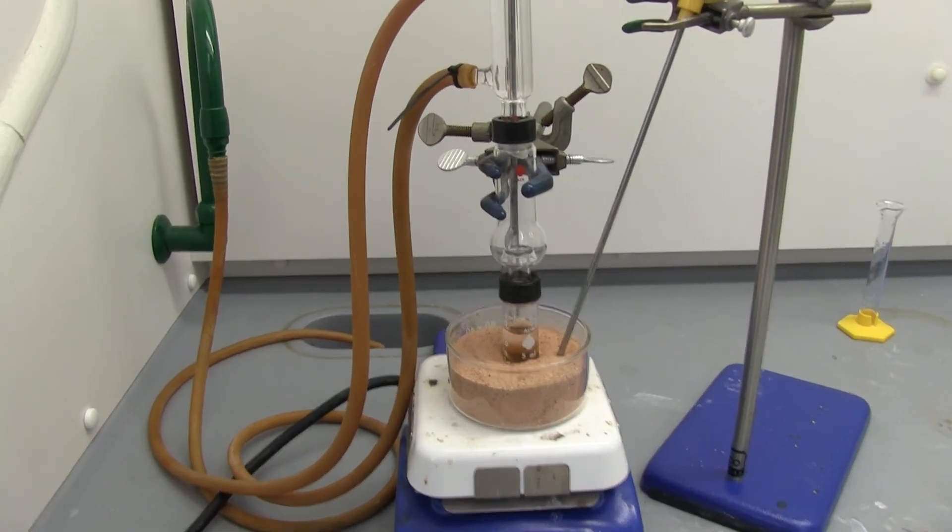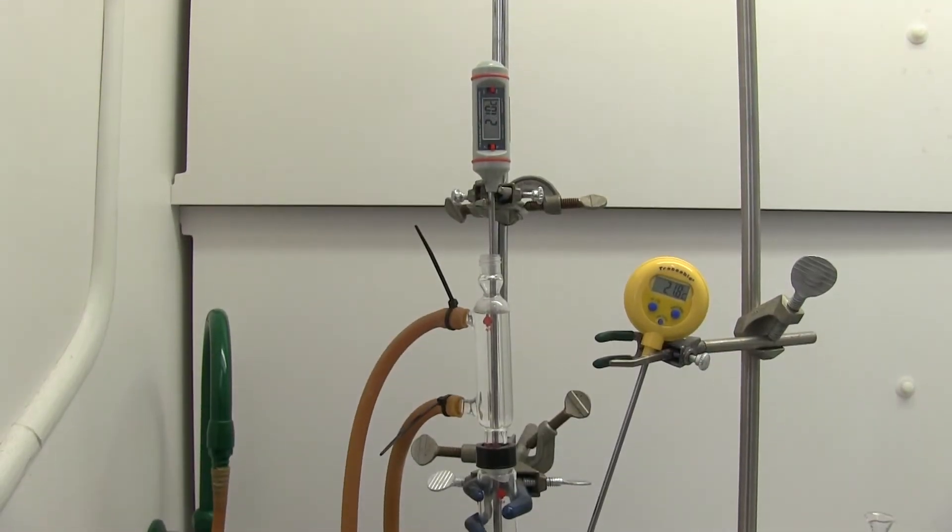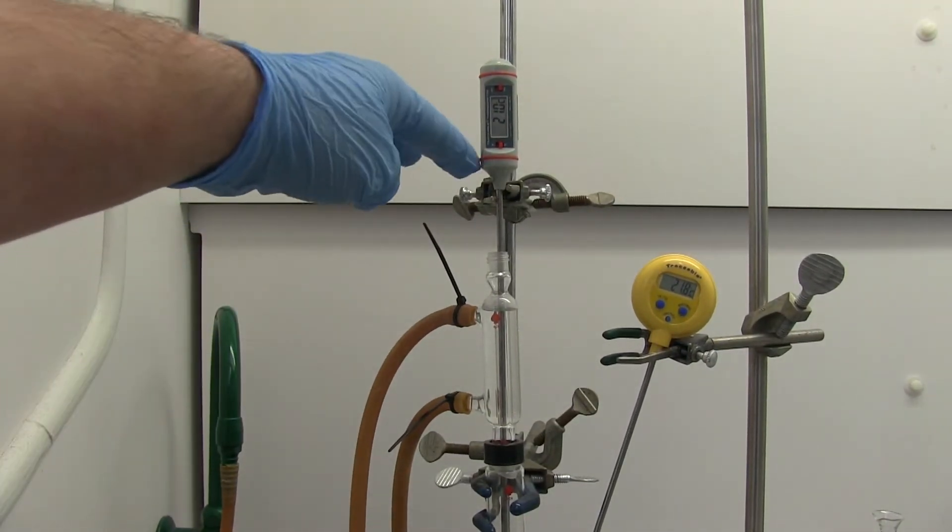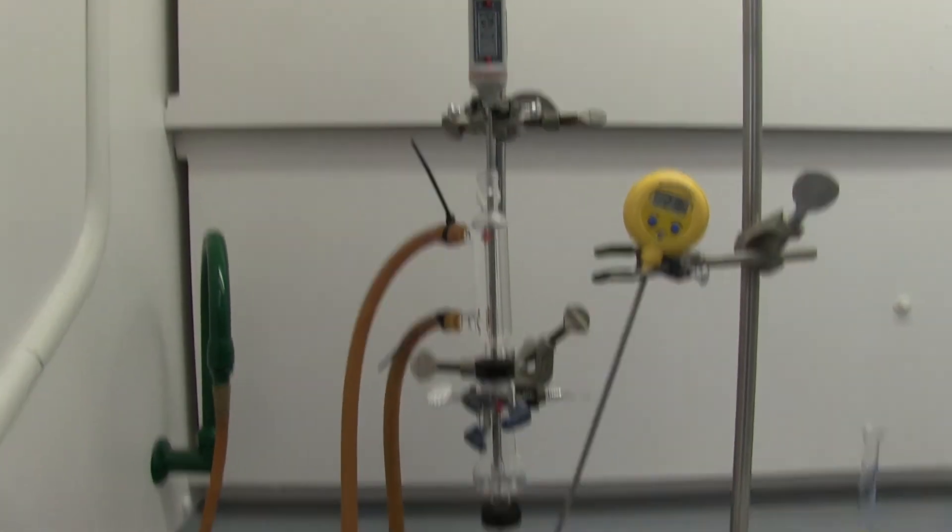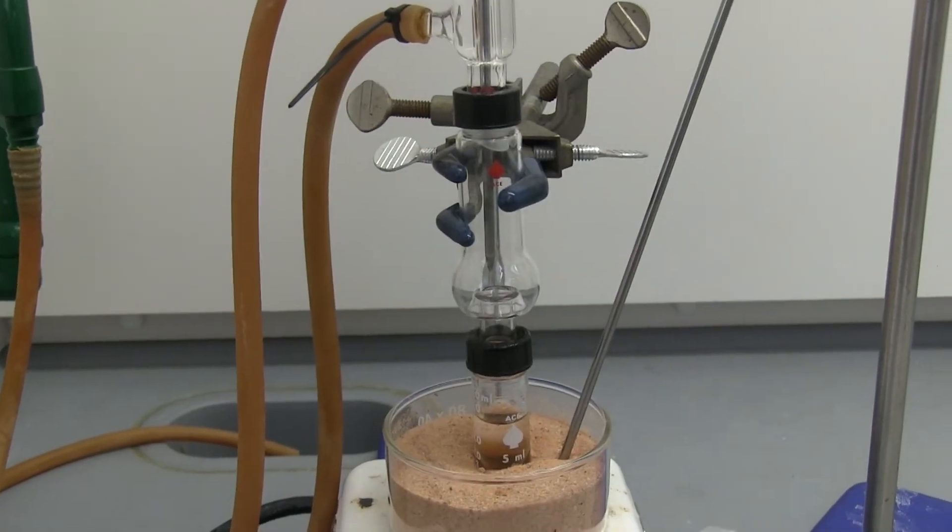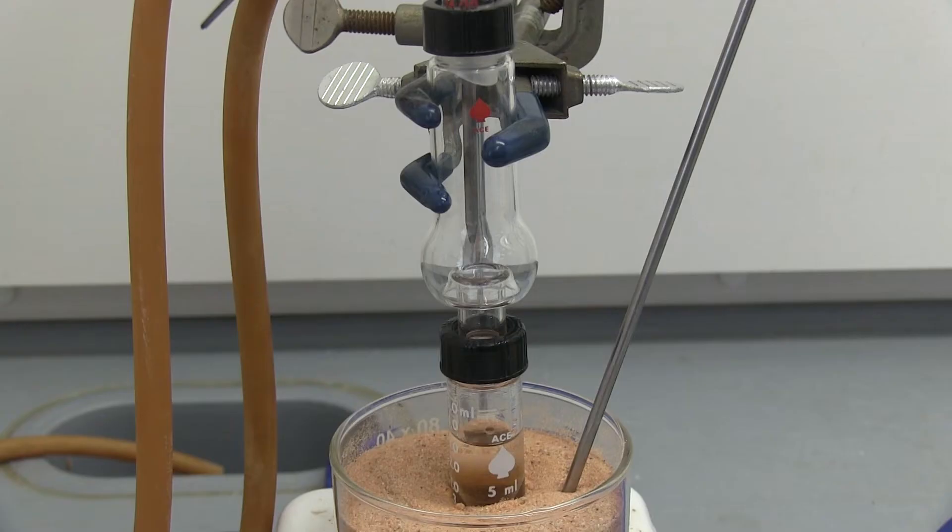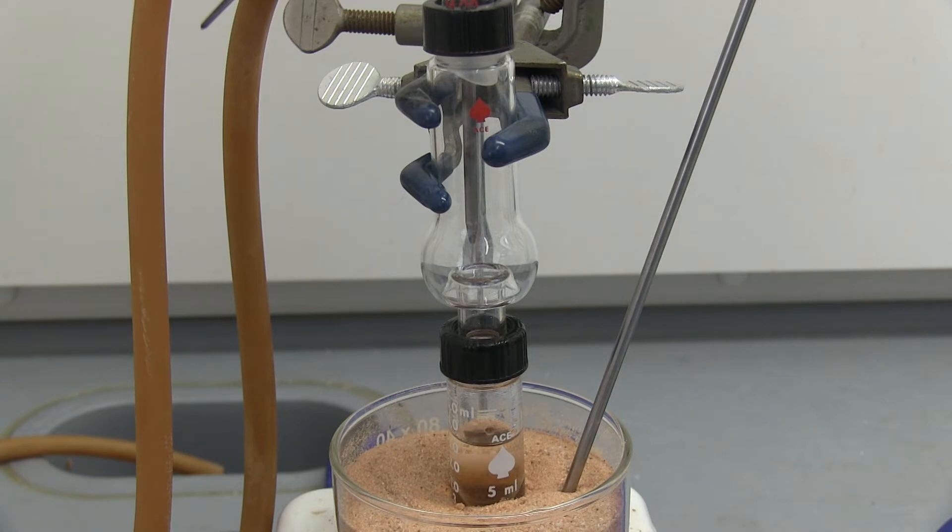Just to show you the setup, we have our thermometer using a clamp just to hold it at the right level, and now we are going to do the distillation. I've turned the heating on, we're going to keep the temperature of the sand around 90 to 110. We want to collect the distillate that happens when it's 30 to 45 degrees Celsius.